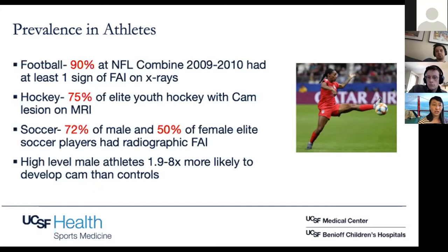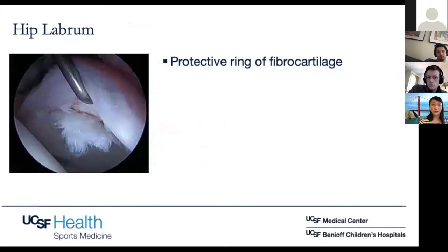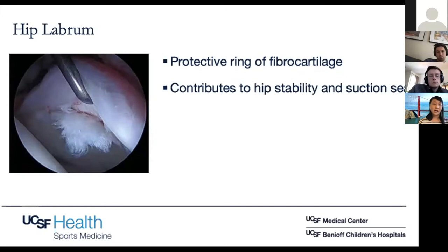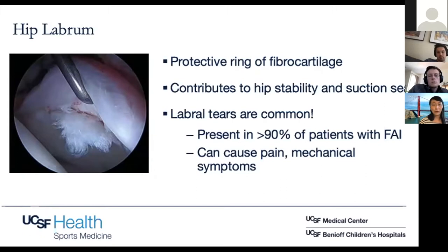Looking more at the specific structure: the hip labrum, as you can see in this arthroscopic photo, is a protective ring of fibrocartilage that lines the hip socket and has a couple of different functions. It contributes to hip stability and the suction seal of the hip. Labral tears are actually really common, similar to the radiographic signs of FAI — they're present in over 90% of patients that have bony changes and can cause mechanical symptoms as well as pain.